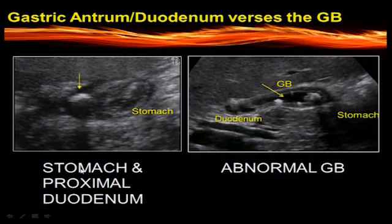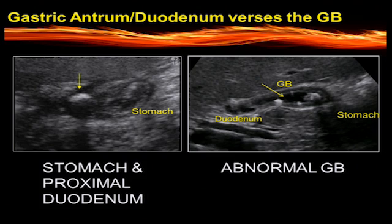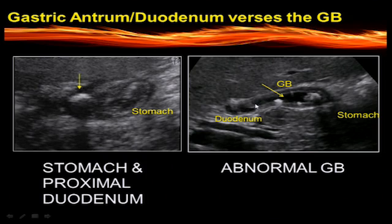One of the most common pitfalls new sonographers run into is confusing the gastric antrum and duodenal loop for the gallbladder. When this nearby gallbladder imposter has a mixture of air and fluid contents, it can really mimic a gallbladder full of stones. This is often really difficult to tell the difference in our sub-optimal patients.